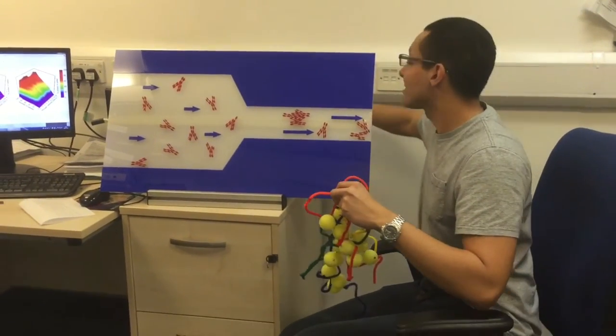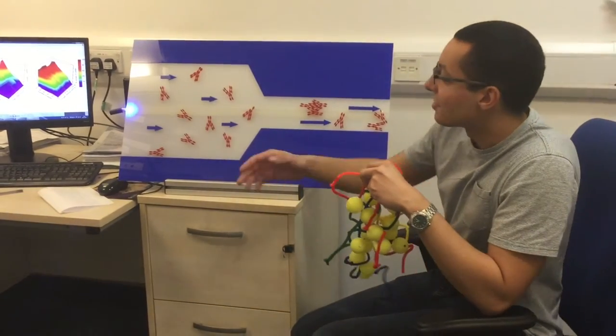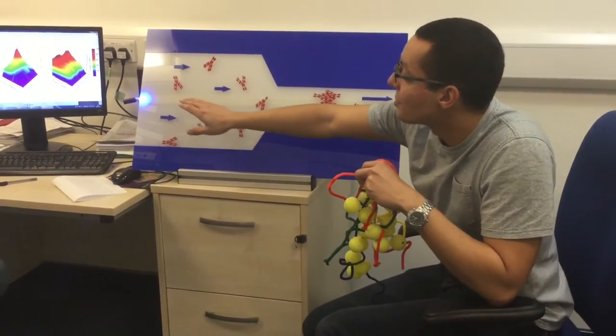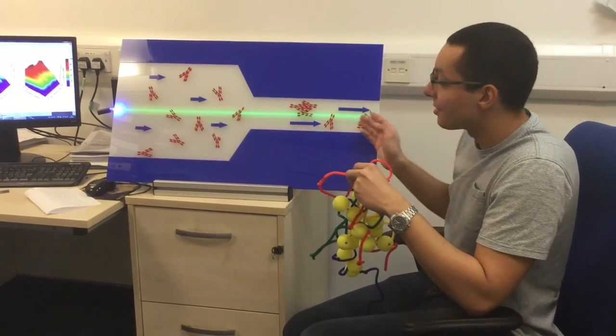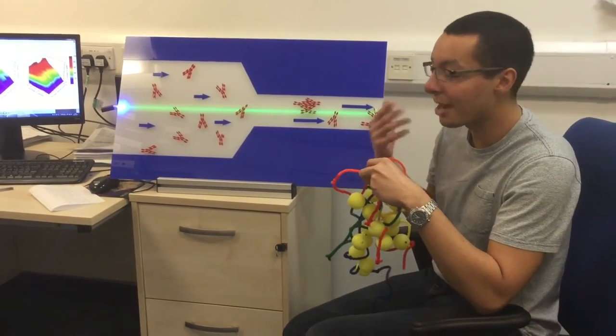So what happens with extensional flows? This could occur in filtration, for example, where you have a flow moving slowly and then all of a sudden there's a contraction in the flow and the fluid is forced to rapidly accelerate.